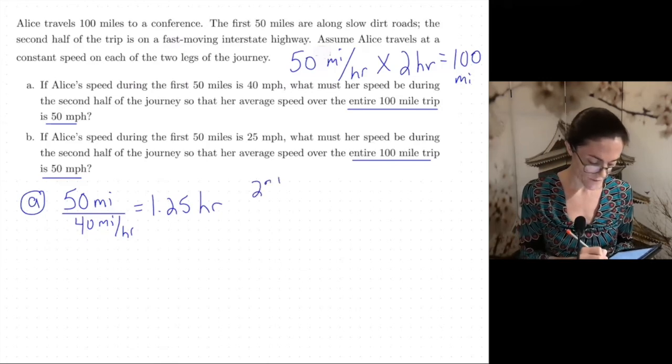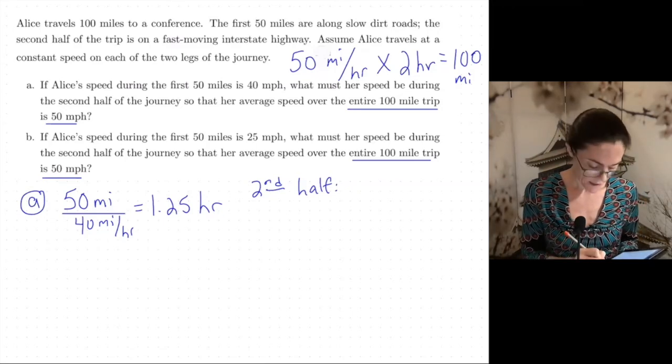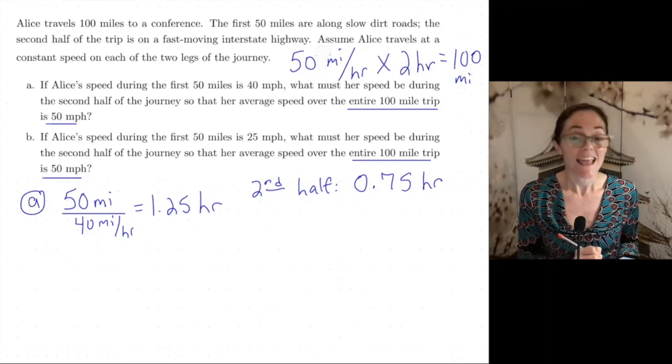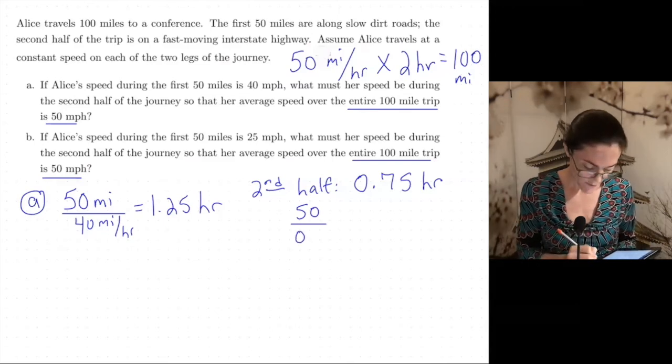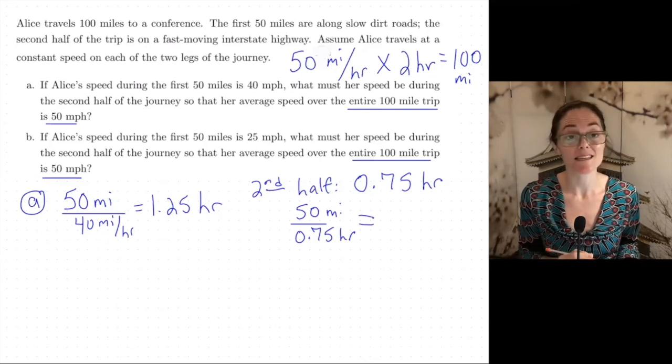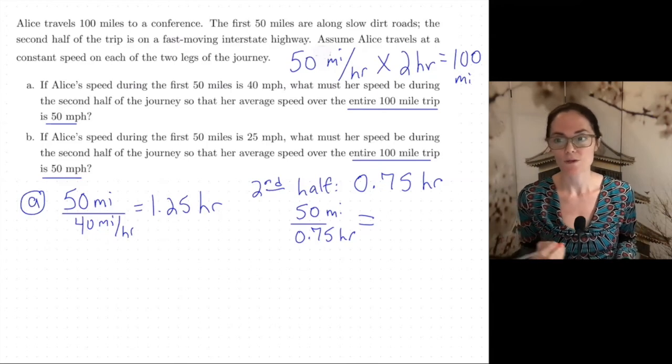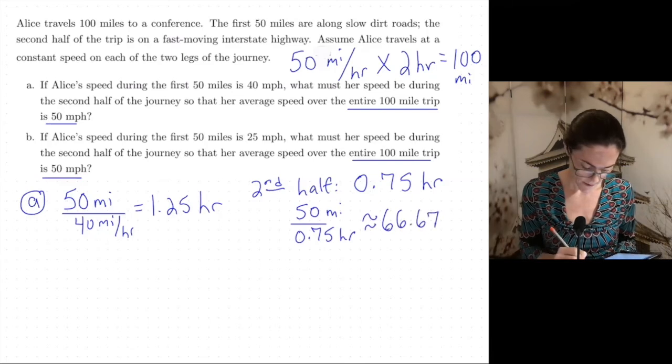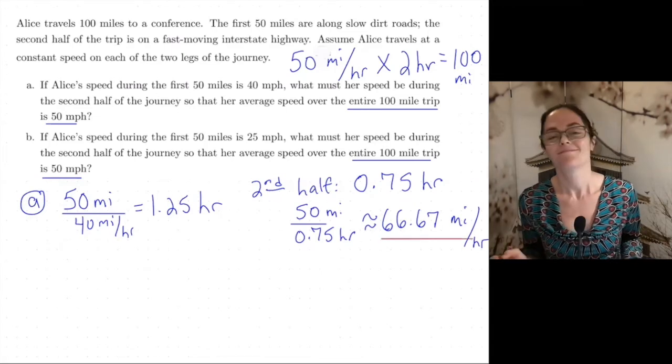And so the second half must be traveled in 0.75 hours. And she will travel 50 miles in 0.75. This is miles. This gives us the speed that she will travel in the second 50 miles. And when you divide here, we get this is approximately 66.67 miles per hour. So this is the answer to part A.